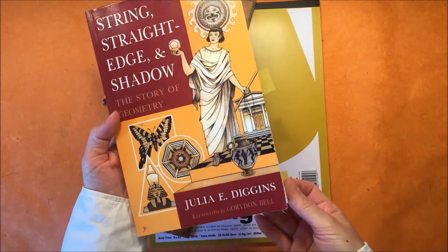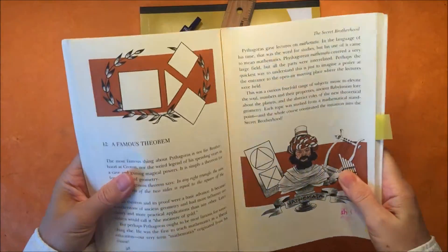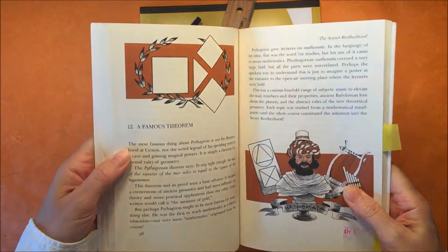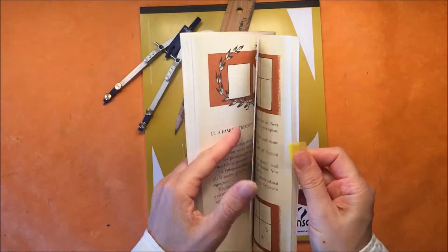So we're reading this book called String, Straight Edge, and Shadow by Julia Diggins, and this is a chapter that explains how to do this demonstration.